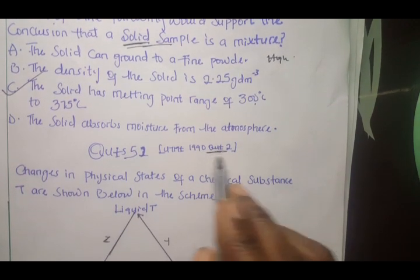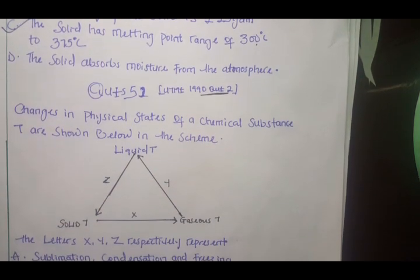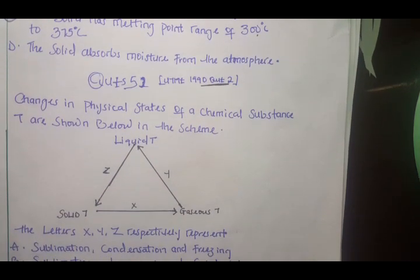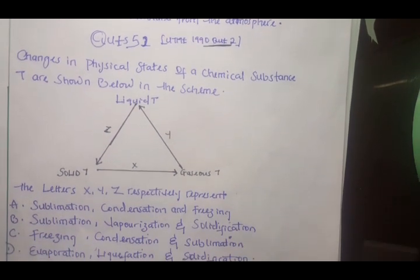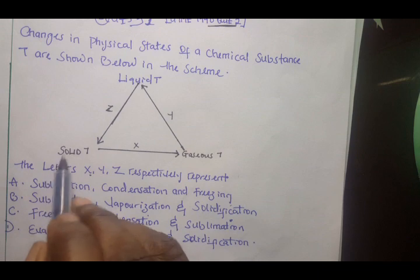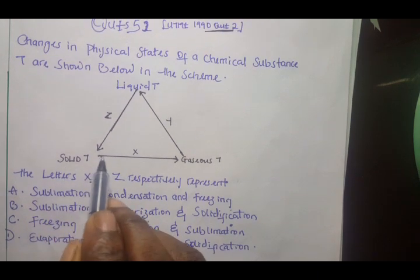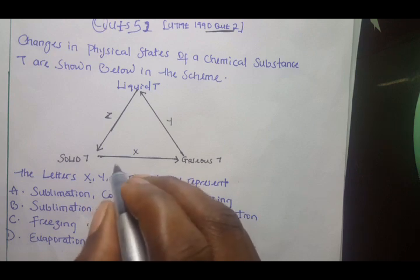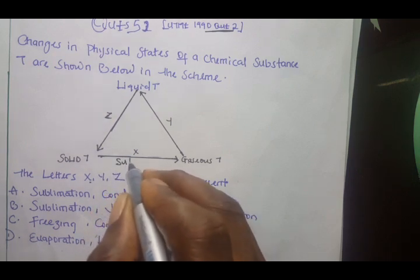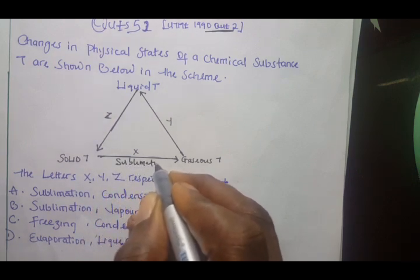The melting point is between the range of 300 to 350, which is very very high, and that should be the right answer. Question 5, extracted from 1990 question 2, we have changes in physical state of some gas substance shown in the scheme. We have solid, liquid, and gas.